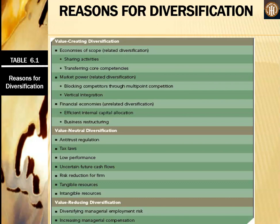Why do companies decide to diversify? There are three types of diversification strategies: value-creating, value-neutral, and value-reducing. Value-creating diversification is about economies of scope — sharing activities and transferring core competencies. Activities could include a distribution channel or accounting systems. Transferring core competencies means having the same experts working across different firms, sharing their knowledge and ways of doing things. Companies also diversify for market power, blocking competitors through multipoint competition, and for financial economies, which is more suited to unrelated diversification strategies.